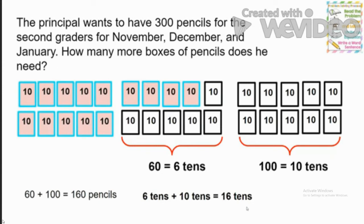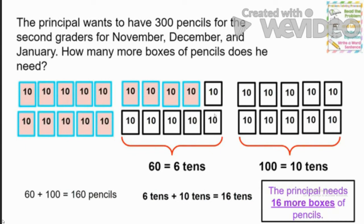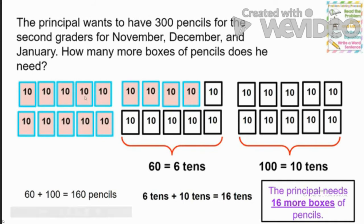So how many more boxes of pencils does he need? The principal needs 16 more boxes of pencils. I started with my 14 boxes, but to get to 300 pencils I had to add 16 more boxes. That gives me exactly 160 more pencils, which together with my 140 is 300 pencils.